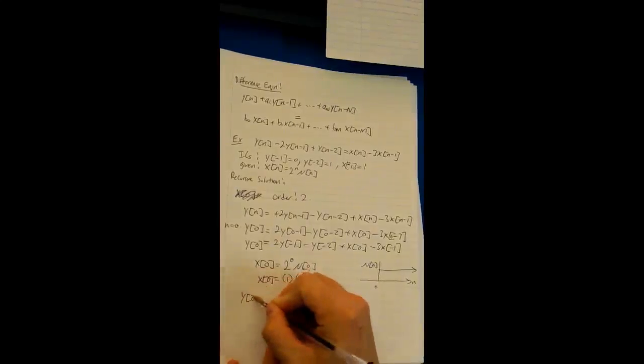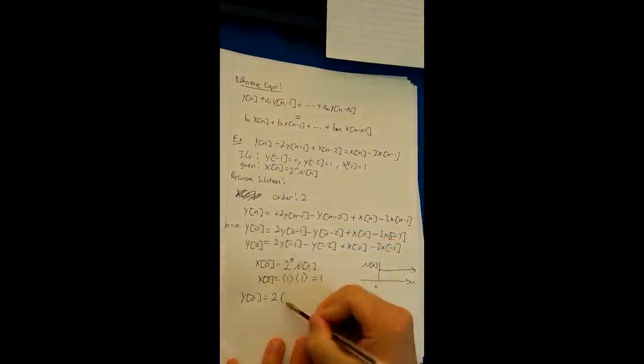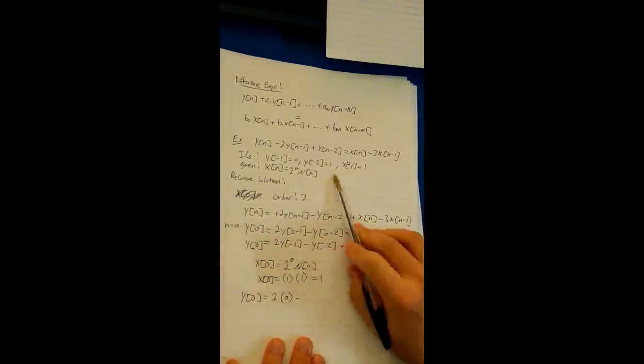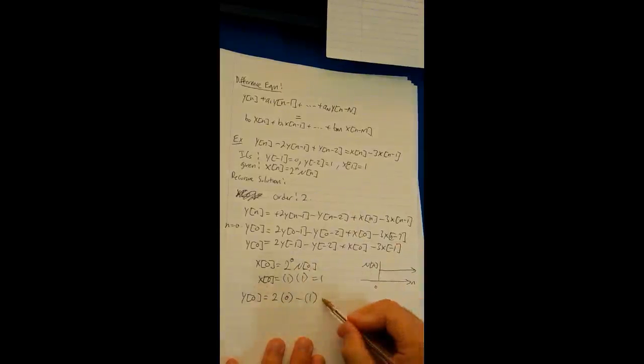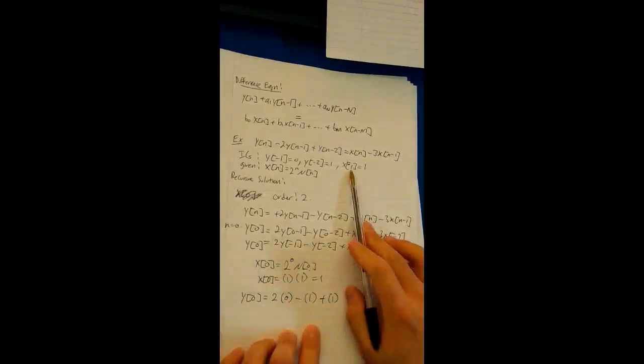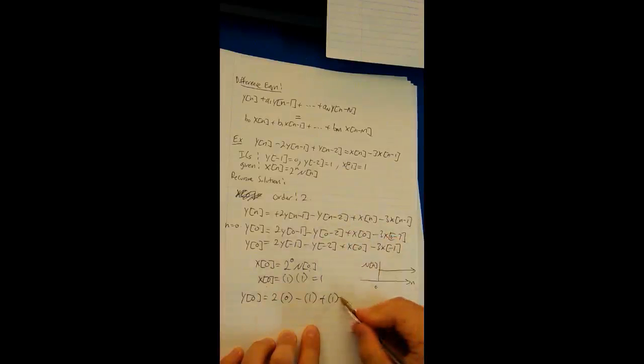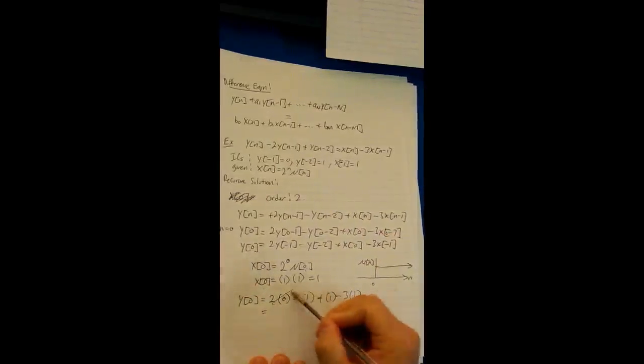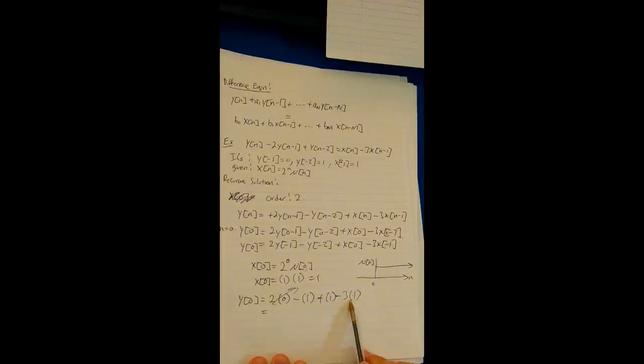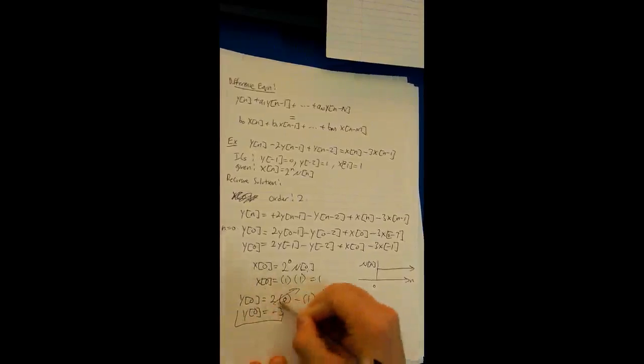So now y(0) = 2*y(-1) - y(-2) + x(0) - 3*x(-1). y(-1) is 0, so this is 0, minus y(-2) is 1, so this is 1. x(0) is 1, so that's plus 1, and x(-1) is 1, so it's minus 3 times 1. That comes out to -3, so y(0) = -3.